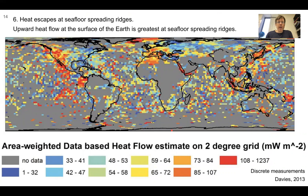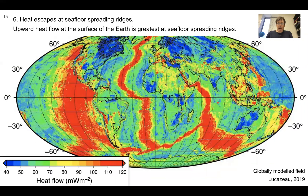Number six is about heat. Basically, the Earth is in a constant state of releasing heat from its interior. This shows a scattered map of discrete measurements of heat flow at the surface of the Earth, and when compiled with other information, you get a much cleaner map — with units in milliwatts per meter squared. The globally modeled heat flow field looks quite like the map of plate age, with reds centered on seafloor spreading such as the mid-ocean ridge between South America and Africa. That's where most of the heat is escaping from the Earth.